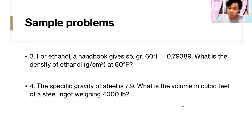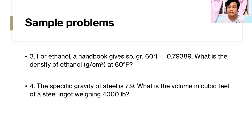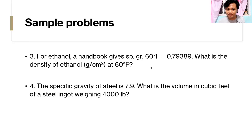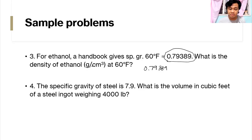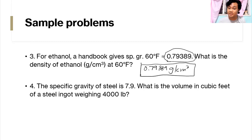For our next problem: for ethanol, the handbook gives a specific gravity at 60 degrees Fahrenheit of 0.79389. What is the density of ethanol in grams per cubic centimeter at 60 degrees Fahrenheit? Assuming the reference water also has a density of 1 gram per cubic centimeter, just take the specific gravity value as it is. So the answer is 0.79389 grams per cubic centimeter — that's it.